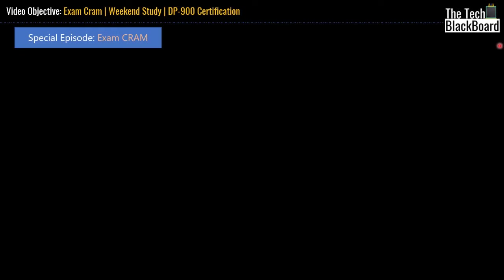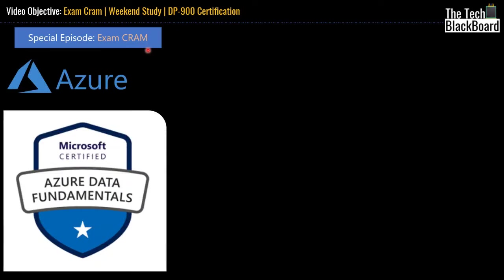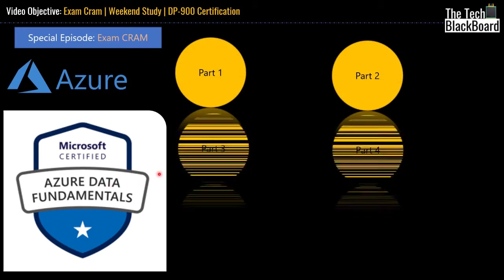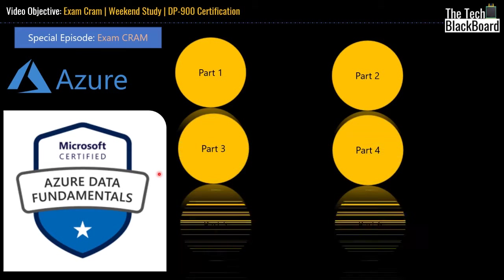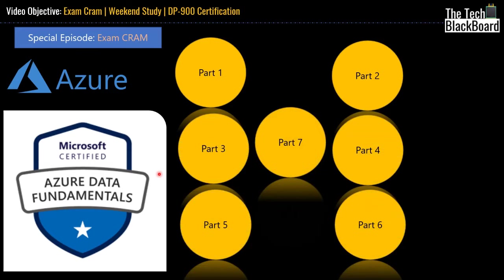Hello and welcome back to the Tech Blackboard. Today is our special episode — our first ever exam cram. The objective of this video is to prepare you for the DP-900 certification during the weekend so that you can pass the certification during the coming week. This video is divided into seven parts. Each part will take you through a set of questions and answers with detailed justification for each question.